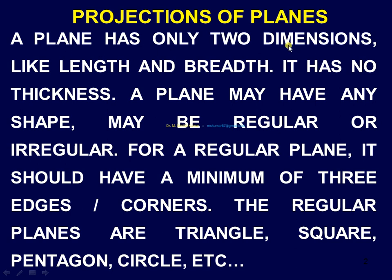A plane has only two dimensions — length, breadth, or width. It has no thickness. A plane may have any shape, may be regular or irregular. For a regular plane, it should have a minimum of three edges. A triangle is a plane that has a minimum of three edges or corners. The regular planes are triangle, square, pentagon, hexagon, circle, etc.